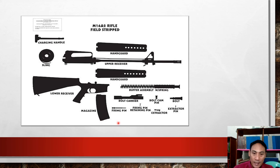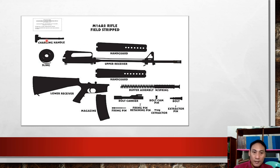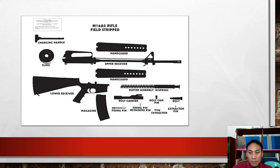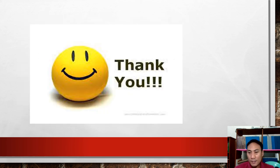For the M16: it has a bolt carrier with a firing pin inside, an extractor, hand guard, barrel, charging handle (pulled to load the firearm), upper receiver group, lower receiver group, and magazine. That concludes the discussion. If you have any concerns, please send a message. Thank you for watching this presentation.